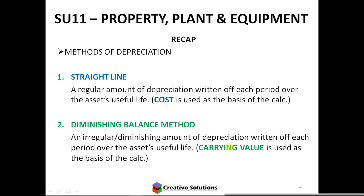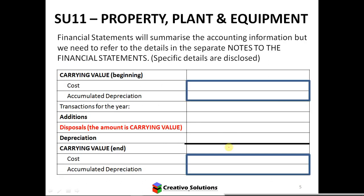We spoke about the two different depreciation methods: straight line and diminishing balance. This disclosure relates to detail, and where do we show detail? In the notes — the notes to the financial statements show all the detail relating to the property, plant and equipment.